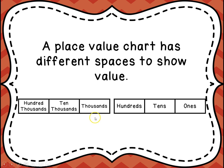A place value chart has different spaces to show value. We have the ones, the tens, the hundreds, the thousands, the ten thousands, the hundred thousands, and it will continue on and on and on depending on how we look at it.